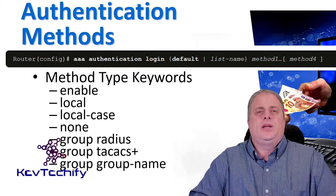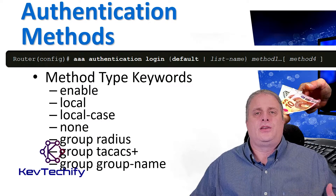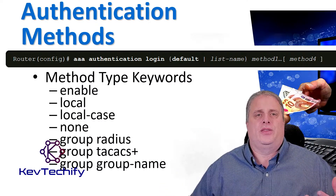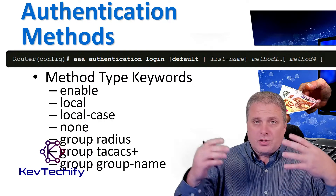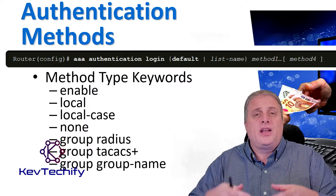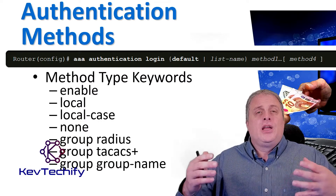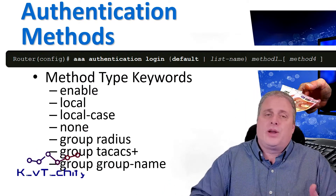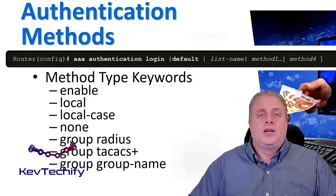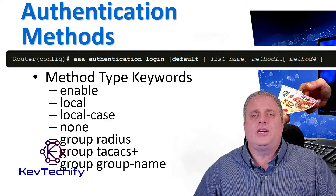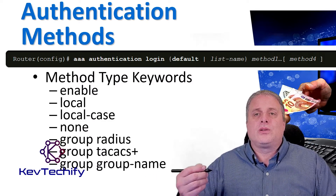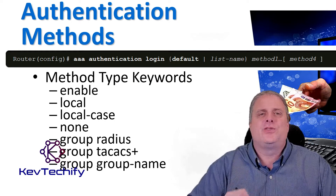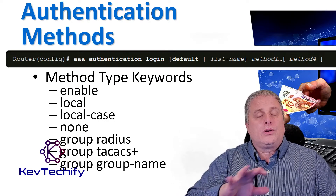Up to four methods can be defined to authenticate users. This provides fallback methods should one of the methods fail. So if your local users aren't working for some reason, it will fall back to the other methods you have — it could be a RADIUS server or a TACACS server. To enable local authentication using a pre-configured local database, those are the users you created; use the keyword local or local-case.